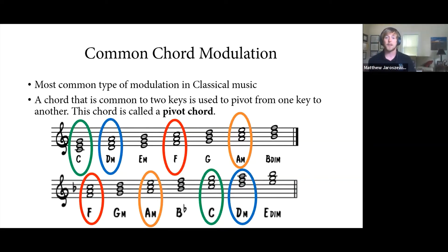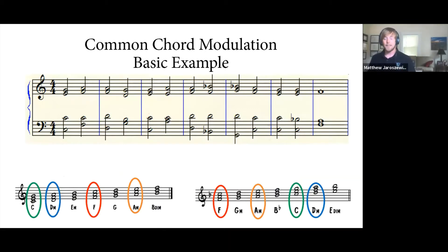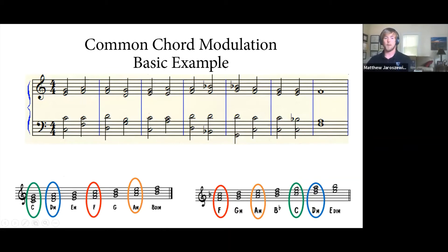A chord common between two keys is called a pivot chord — it's used to pivot from the starting key to the key you're modulating to. Here is a basic chord progression that modulates from C major to F major.